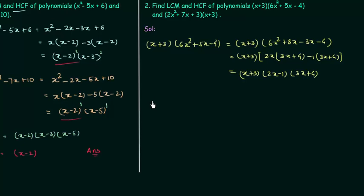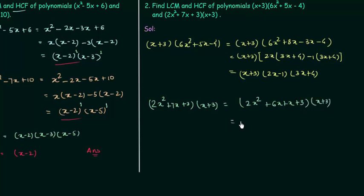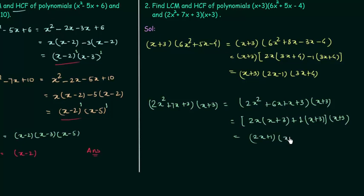Now we move to the second polynomial: (2x² + 7x + 3)(x + 3). We factorize 2x² + 7x + 3 by rewriting 7x as 6x + x, giving 2x² + 6x + x + 3. Taking 2x common from the first two terms gives 2x(x + 3), and taking 1 common from the last two terms gives (x + 3). So the factors are (2x + 1)(x + 3), and the full second polynomial factors as (2x + 1)(x + 3)².